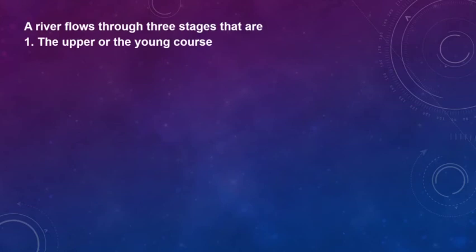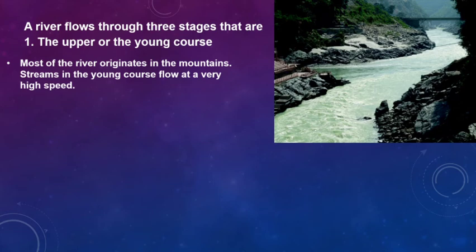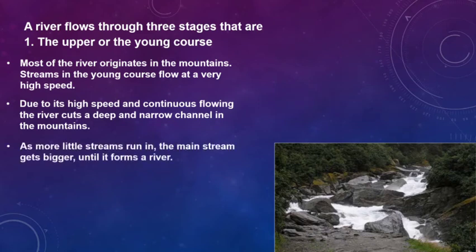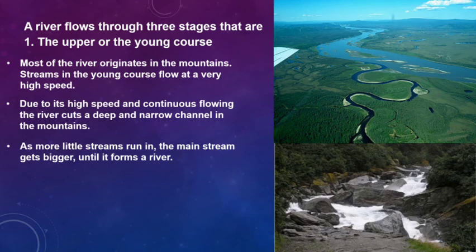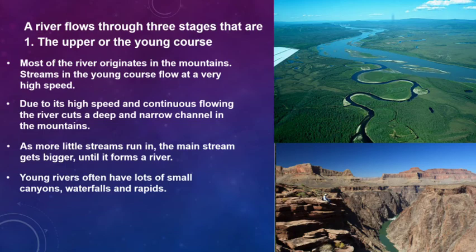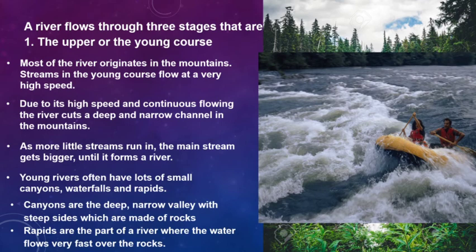A river flows through three stages. The first is the upper or young stage. Most rivers originate in mountains, where streams flow at a very high speed. Due to this high speed and continuous flowing, the river cuts a deep and narrow channel in the mountains. As more small streams join, the main stream gets bigger until it forms a river. Young rivers often have lots of small canyons, waterfalls, and rapids. Canyons are deep, narrow valleys with steep sides made of rock. Rapids are the part of a river where water flows very fast over rocks.